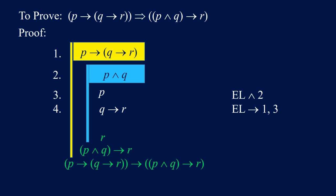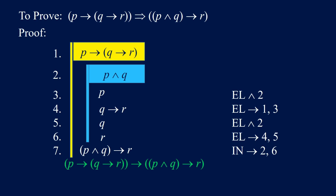R occurs on the right side of the implication in step 4. To get R from there we apply the elimination of implication to 4, but we need Q. We get Q from 2 by applying the elimination of AND, indicating this with 5. We then get R by applying the elimination of implication to 4 and 5, indicated with 6. We establish our original conclusion by applying introduction of implication, and we are done.